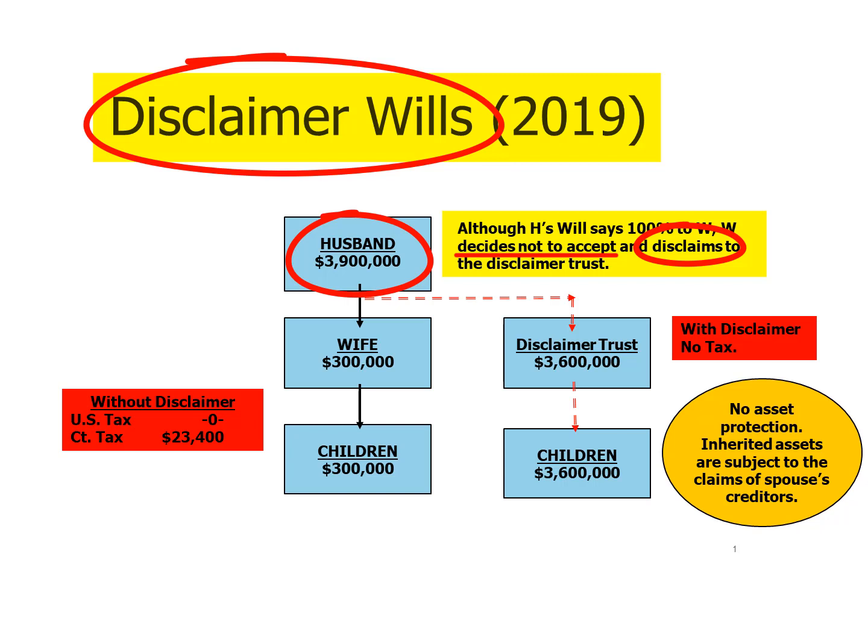The surviving spouse could choose to disclaim any amount — it doesn't have to be the exemption amount. But if she disclaims more than the exemption, there will be a tax on the excess disclaimed amount. As long as the disclaimed property is less than the available exemption, there will be no tax resulting from the disclaimer. So she can disclaim up to $3.6 million without generating a tax.